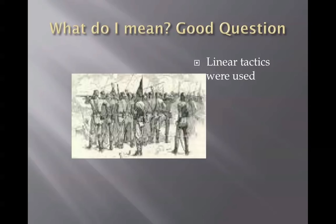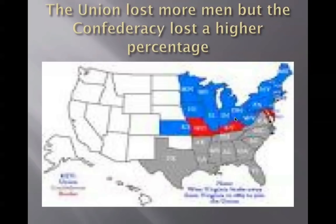The Union lost more men than the Confederacy. On this map, the blue states are the Union, the gray states are the Confederacy, and the red states were border states — slave states that remained loyal to the Union. Here's Louisiana, here's Lake Charles, here's Basile. The Union lost more men overall, but the Confederacy lost a higher percentage — that was a big advantage for the Union.